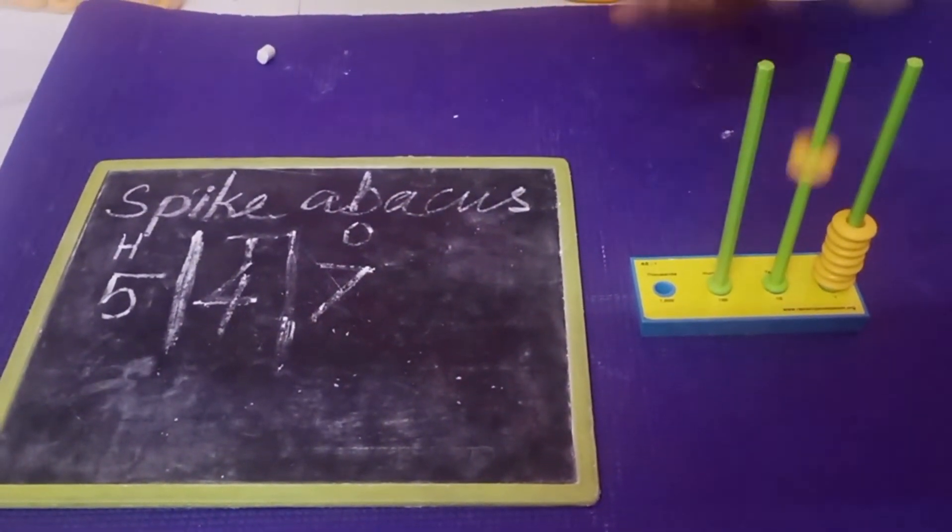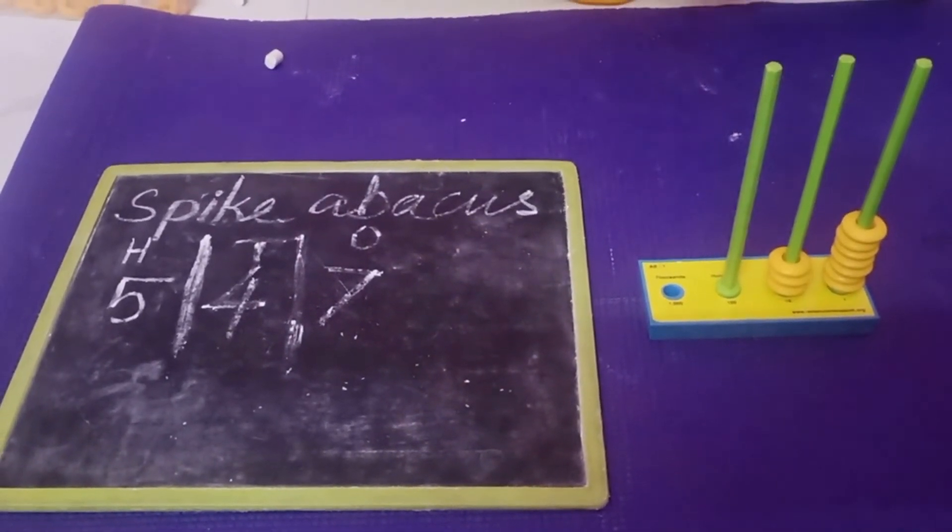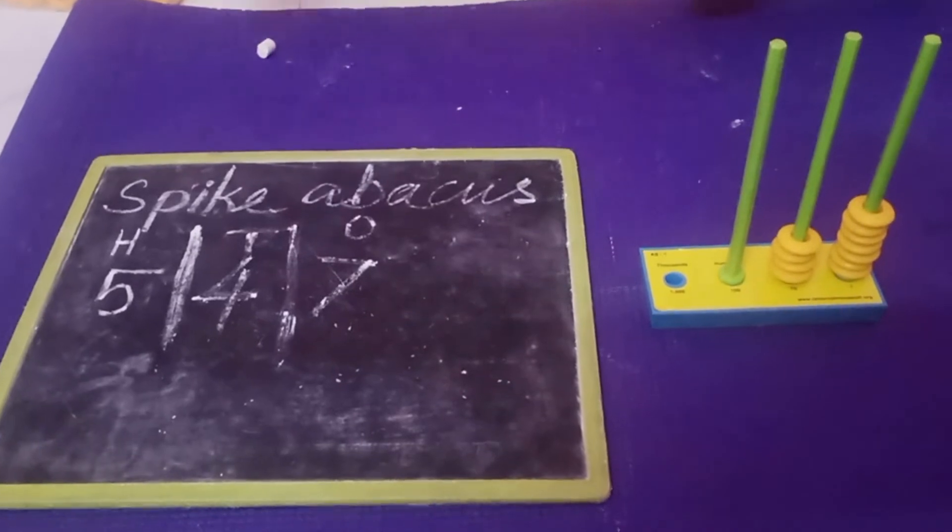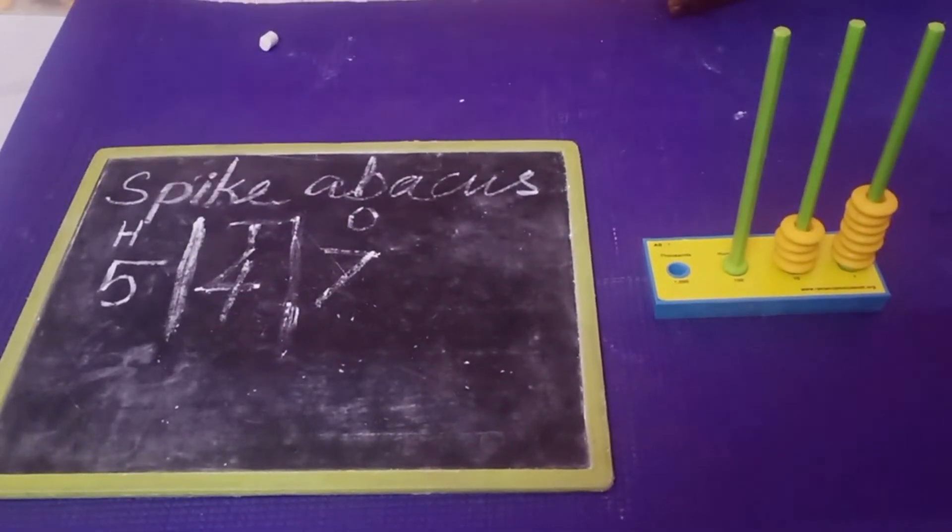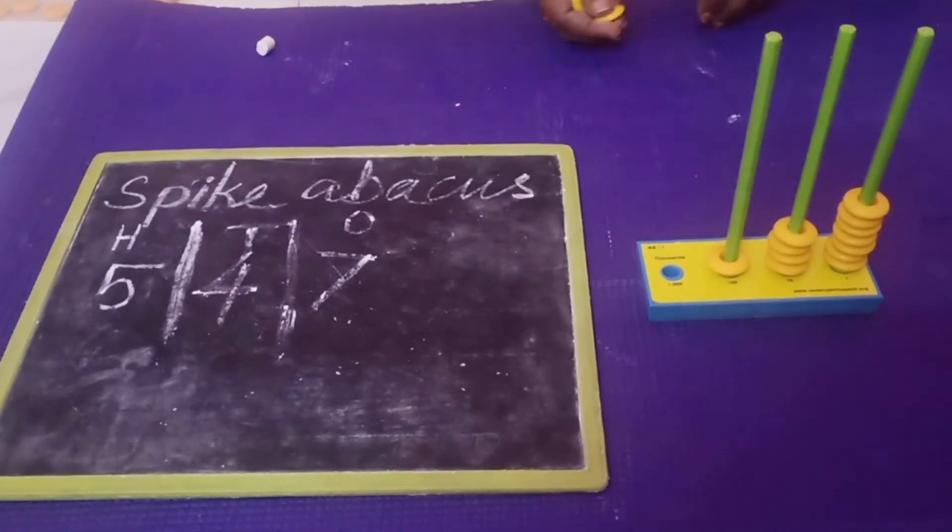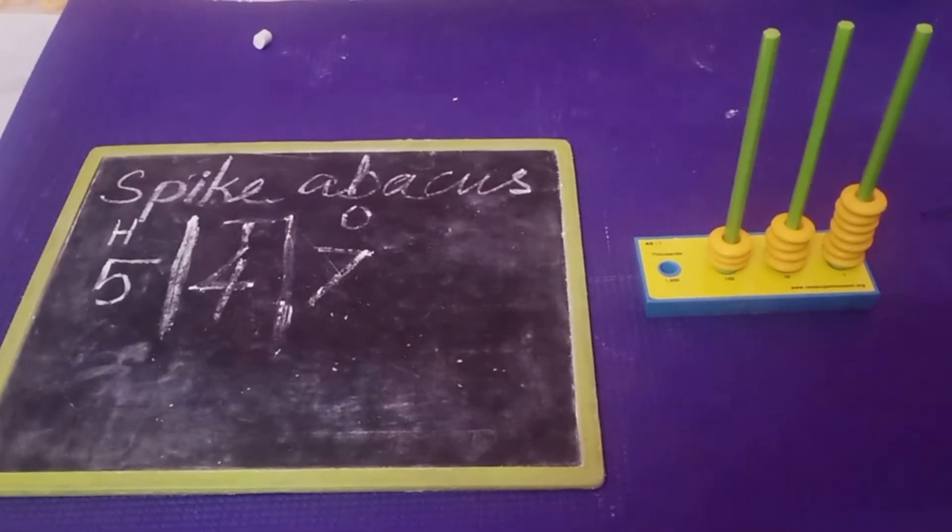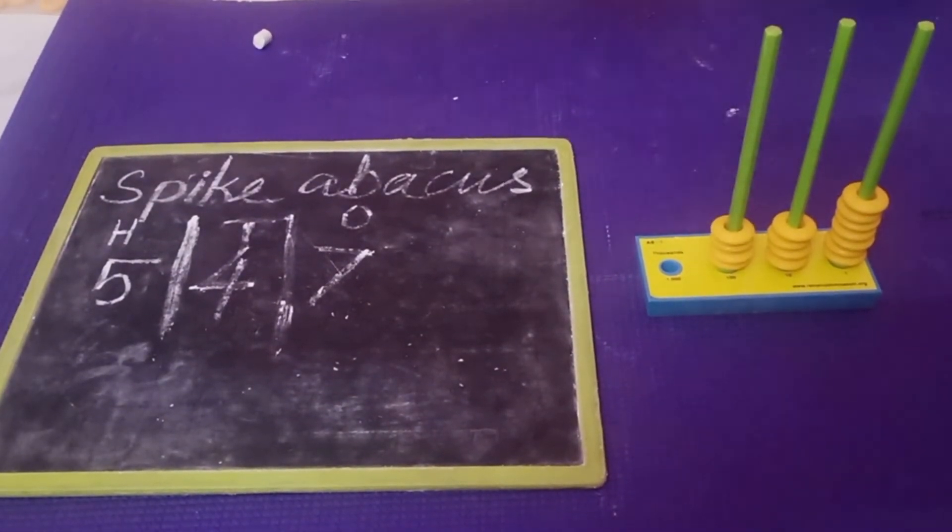10, 20, 30, 40. Then the hundreds: 100, 200, 300, 400, 500.